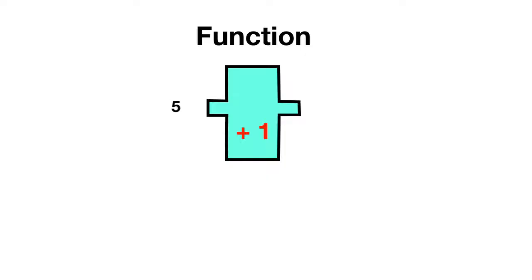If you put in this 5, the function will add 1 to it and you'll get out a 6. Now we often talk about what we put into functions as an x and what we get out on the other side as the y. Now this lets us write out functions like the one we're looking at as y the output is equal to x the input plus 1.